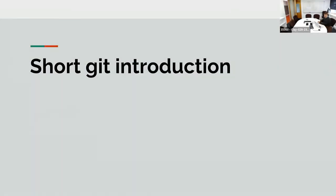Thanks for coming. Today we're going to talk about version control, specifically Git. Just to get everyone on the same page, a version control system is meant to keep track of changes to a document. It's originally made for software development, but it's also very useful for all other kinds of documents, particularly if they're text-based.